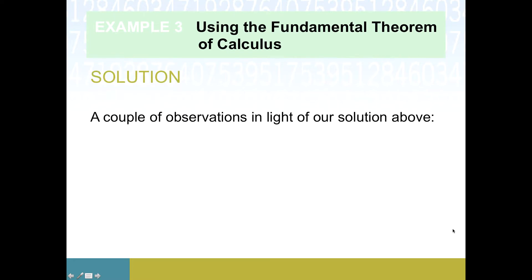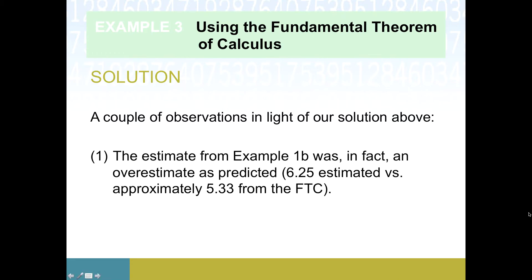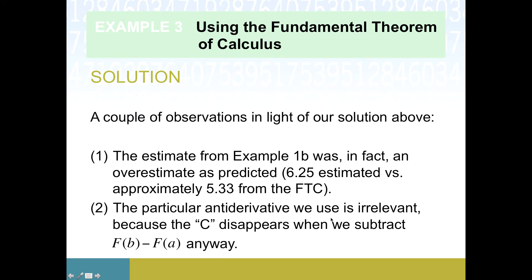So this is interesting. We were instructed to compare this to example one part B. If you look back at that previous video, we got six point two five for our estimate using rectangles, and the exact answer we just got is sixteen thirds, which is approximately five point three repeating. We were kind of right — we thought six point two five was high, and we were pretty good. This five point three repeating is the exact area underneath that parabola, which is kind of remarkable. We didn't have a formula for area under a parabola, but now we do because we know how to find antiderivatives using power rule. And the second observation: the C was not necessary — we could have used that same expression without C and gotten the same answer.